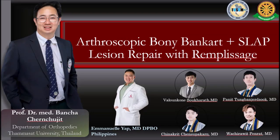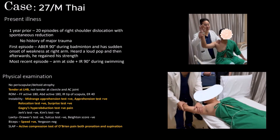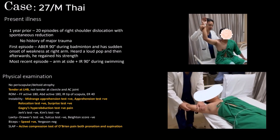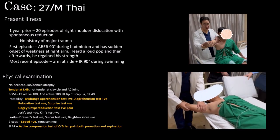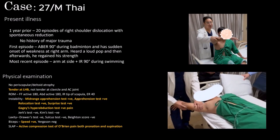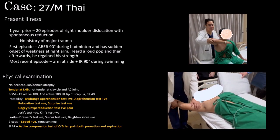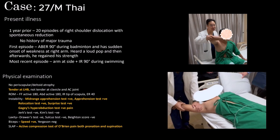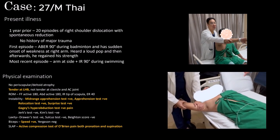Bony Bankart with SLAP Repair and Remplissage Procedure. This is a case of a 27-year-old male who had 20 episodes of recurrent shoulder dislocation.